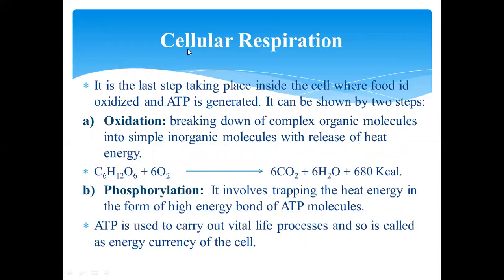The last topic is cellular respiration. It is the final step taking place inside the cell where food is oxidized and ATP is generated. It can be shown in two steps. First, oxidation: the breaking down of complex organic molecules into simple inorganic molecules with the release of heat energy — glucose + O2 → 6CO2 + 6H2O + ATP. Second, phosphorylation: it involves trapping the heat energy in the form of high-energy bonds of ATP molecules. ATP is used to carry out vital life processes and is therefore called the energy currency of the cell.